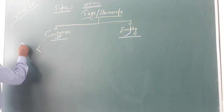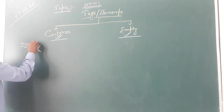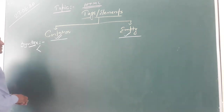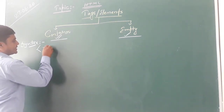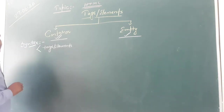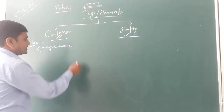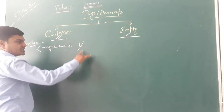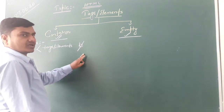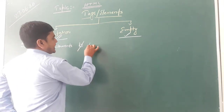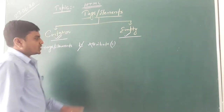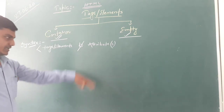Today here we will learn something about the syntax of using tags. To use the syntax we have to add the elements into left angle bracket and right angle bracket. Then after we have to give a space — this is a special symbol that defines a space between two words or letters. Then after we have to add the tag name and then after the attributes. What are the attributes? We will discuss just after.